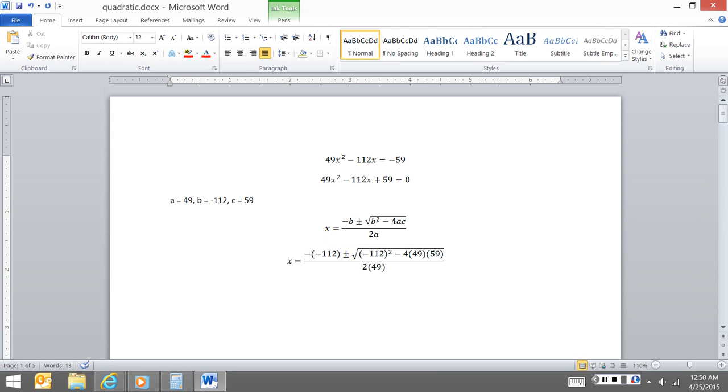The first thing that this requires is we have to have our equation written in the form ax squared plus bx plus c equals 0. So you can see the first thing I'm going to do is I'm going to move this 59. I'm going to add 59 to both sides, and I get 49x squared minus 112x plus 59 equals 0.